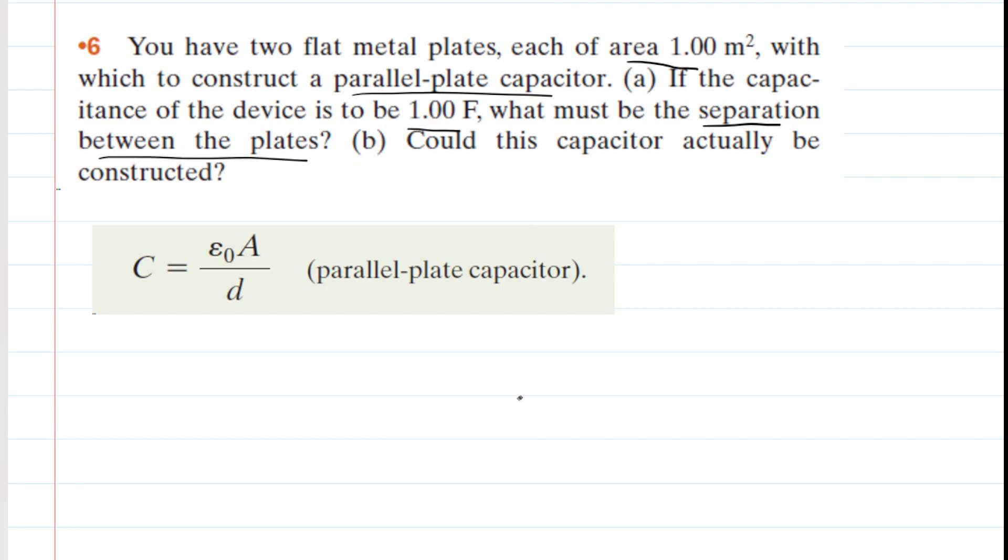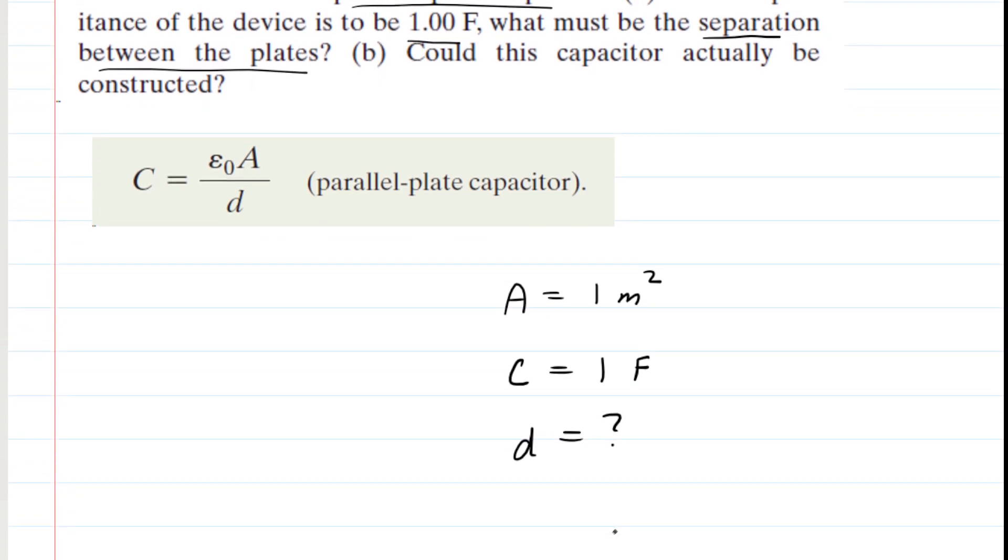We can make a list of some of the known items. We know that the area of each plate is one meter squared, and the capacitance has to have a value of one farad. We are searching for the distance between the two plates, or the plate separation. And of course, we also know this constant epsilon naught.